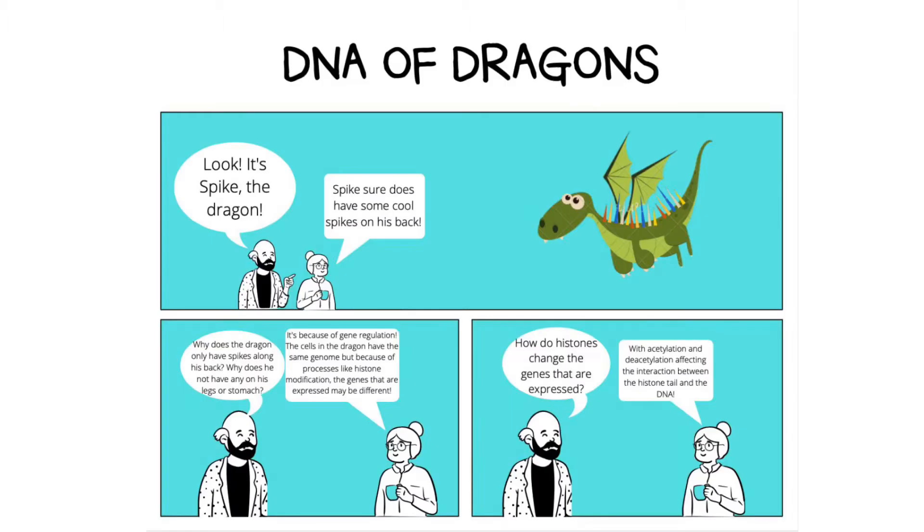Today I'm going to be talking about how a type of gene regulation can impact the expression of genes in a developmental network. To do this, we are going to discuss why adjacent cells in dragons do or do not express spikes.